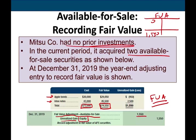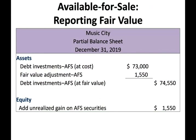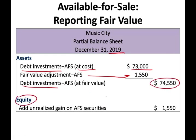So keep track of the fair value adjustment T-account: $1,550 debit balance at end of 2019. On the balance sheet, we show debt investments at cost $73,000, plus fair value adjustment $1,550, equals debt at fair value $74,550. Under the equity section, we report the $1,550 unrealized gain.